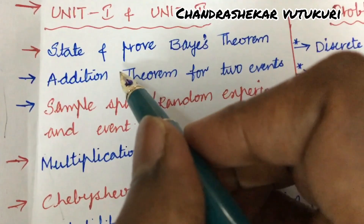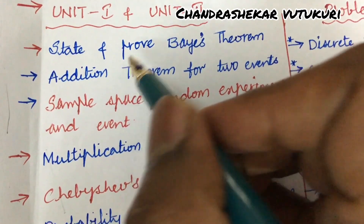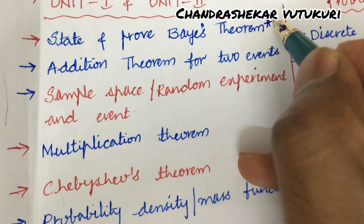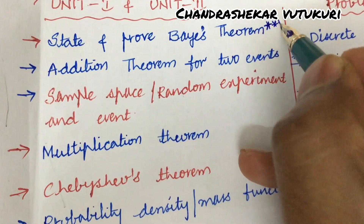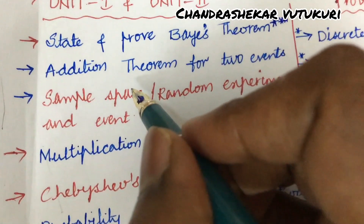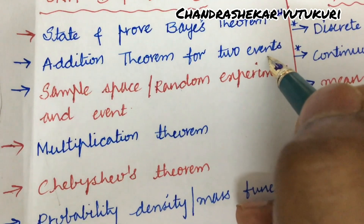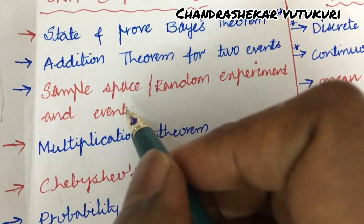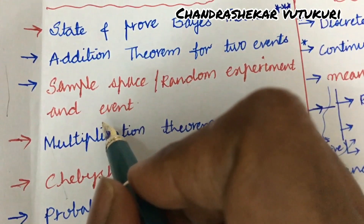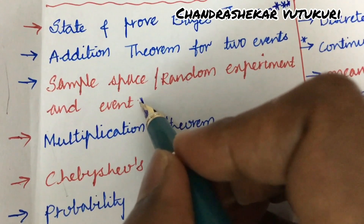The first and foremost gunshot question I can give you is: state and prove Bayes' theorem. Dear students, Bayes' theorem is asked several times. Please do work out the addition theorem for two events, and define the terms sample space, random experiment, and event.